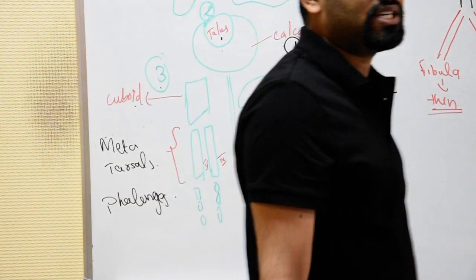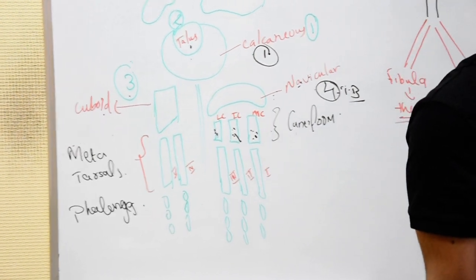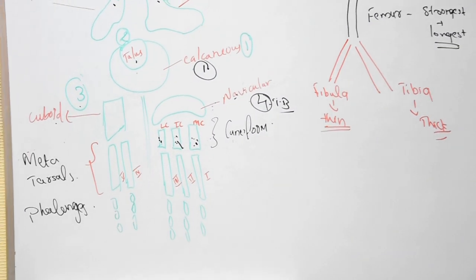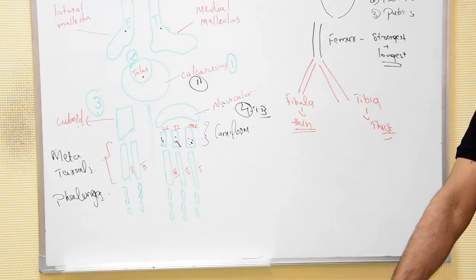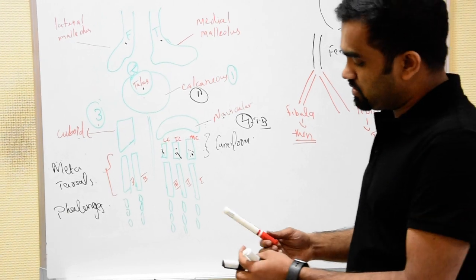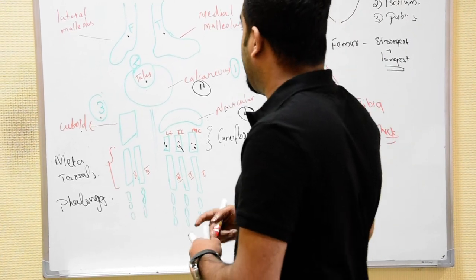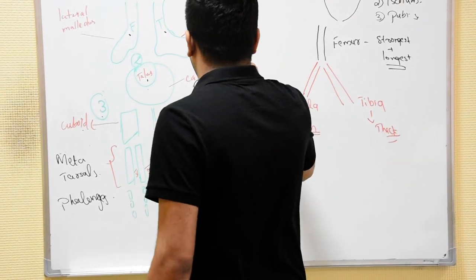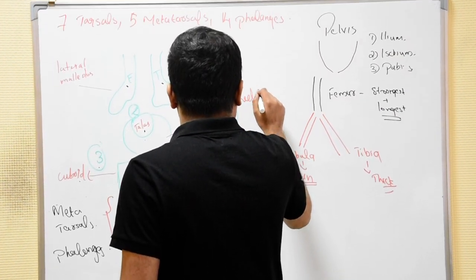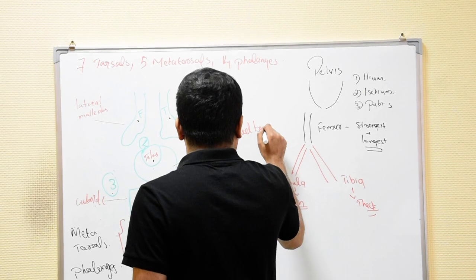Like in the upper limb, that should be clear to everyone now. The calcaneus is also called the heel bone — that is an important point.